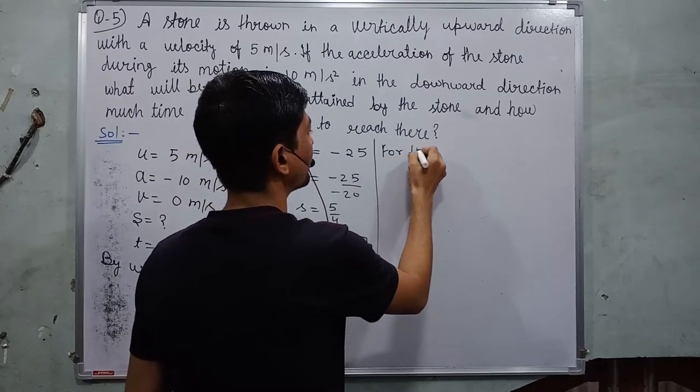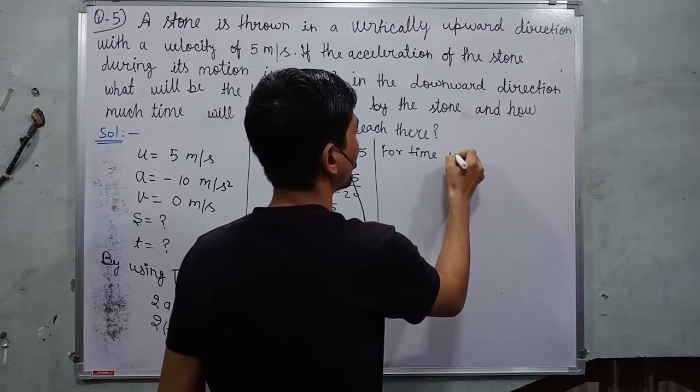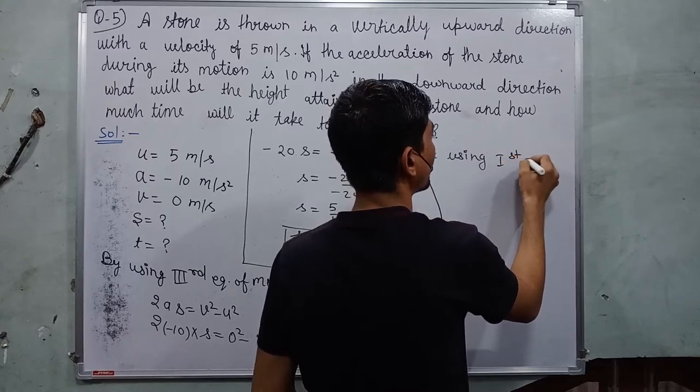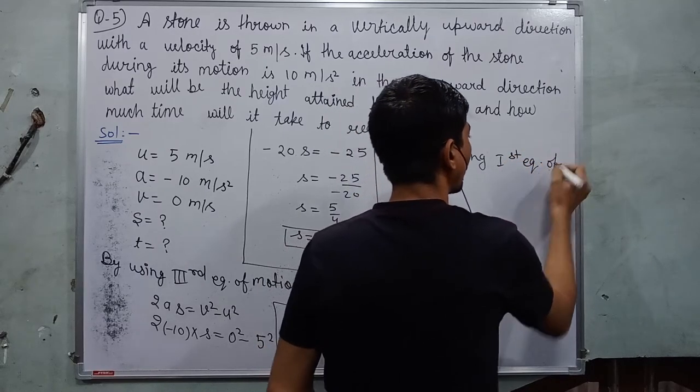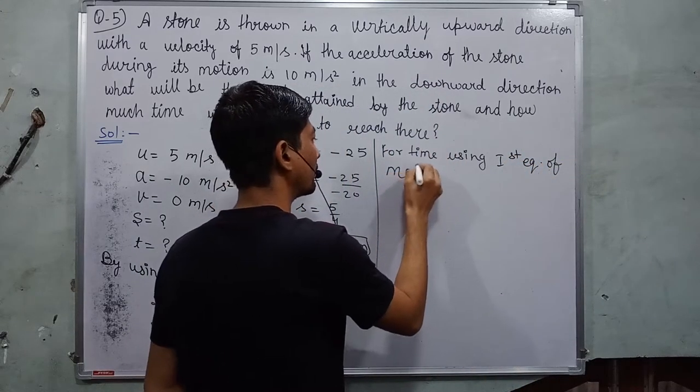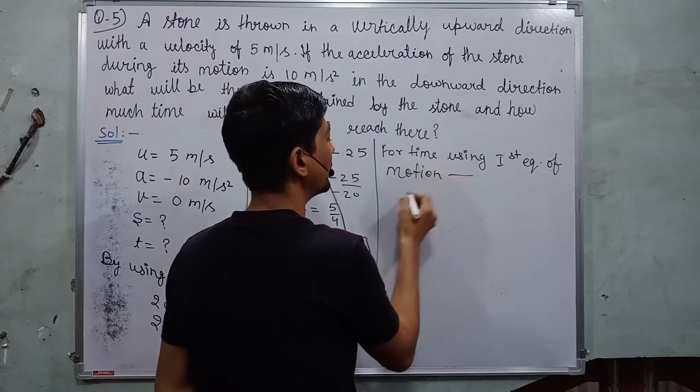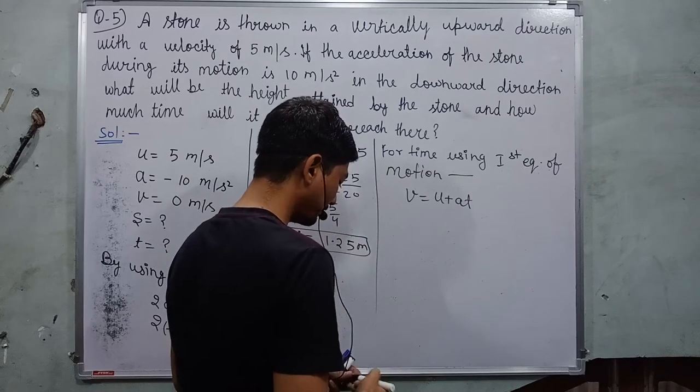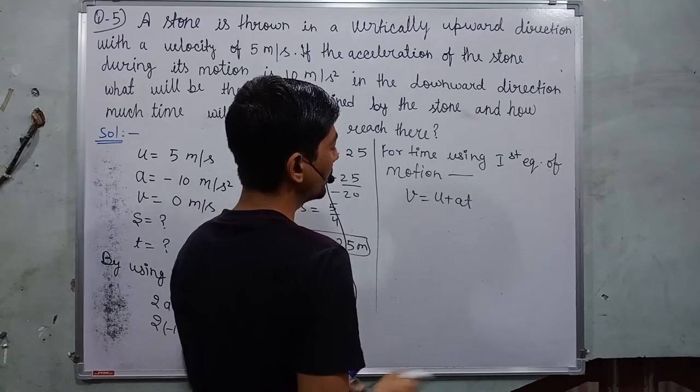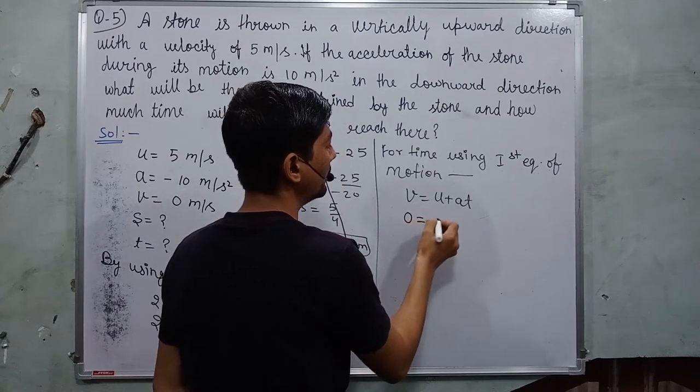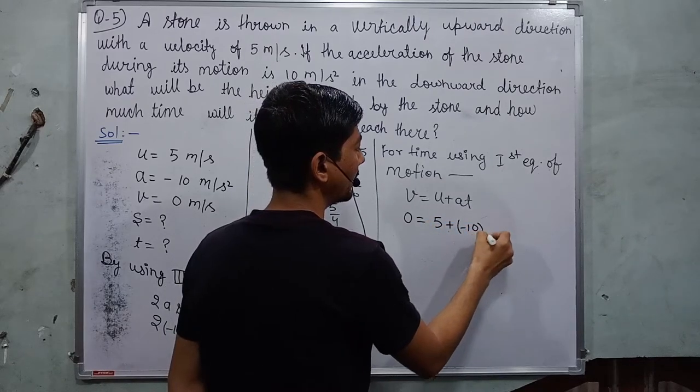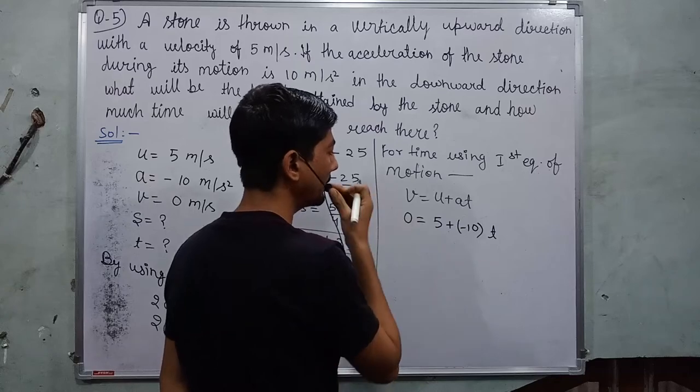For time, using first equation of motion, which is V is equal to U plus A T. So V is equal to 0, U is equal to 5, A is equal to minus 10 and T. After solving this, we find